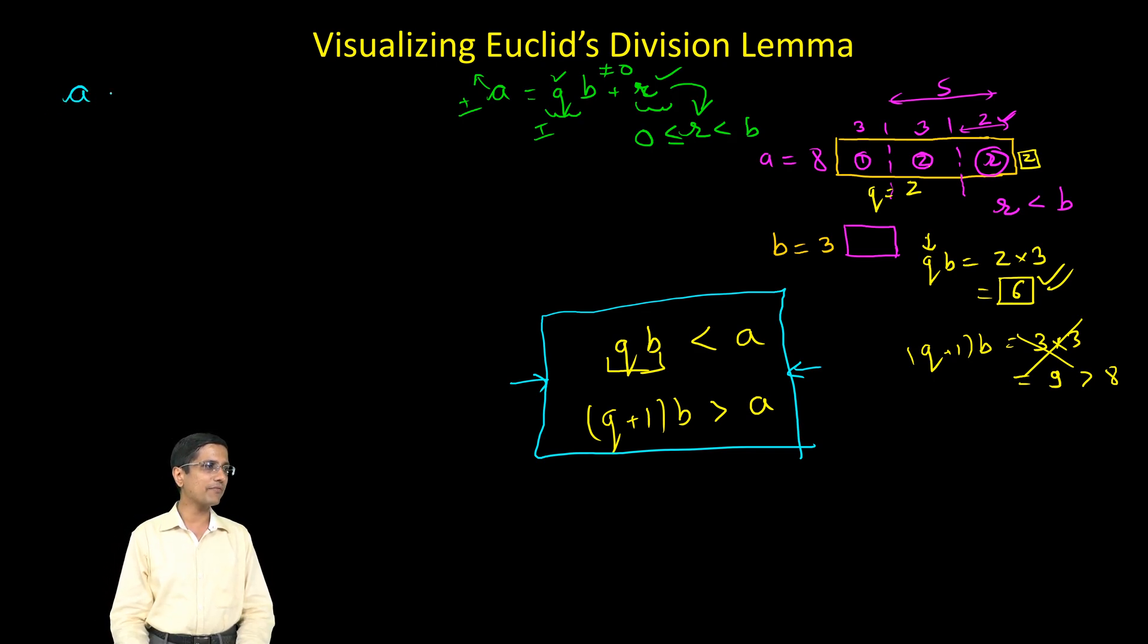So now let's take an example of negative integer. Here let's say that my A is equal to minus 10. I can take A to be whatever I want. I can even take it negative. There are no restrictions on the value of A. We said that it could be an integer, and I keep my B to be the same. I keep my B to be equal to 3.